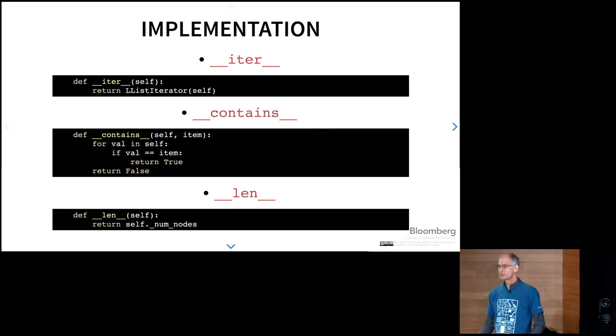So what does this implementation look like? So the dunder iter just returns an instance of the linked list iterator class instantiated with the particular container we're working on right now, basically self of the linked list. Contains is just going through the list. Again, it's using the iteration. It's essentially causing an iteration. And I'm just searching through. And then lastly, the linked list class happens to keep track of how many nodes. So the len operation is very efficient in this particular case.